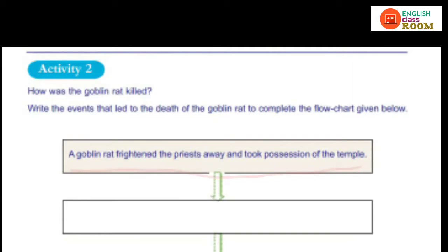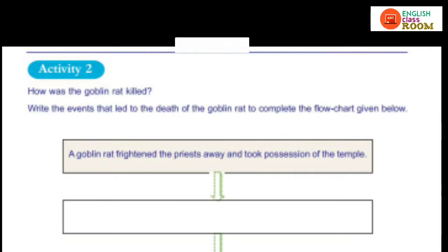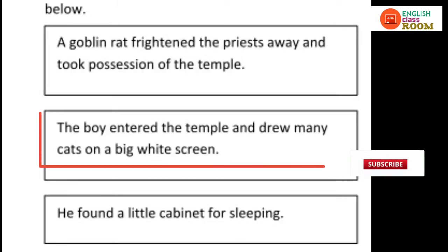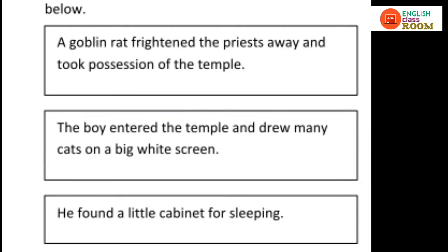The Goblin rat frightened the priests away and took possession of the temple. Then the boy went to the temple in another village. There he saw the big white screen and drew pictures of cats on it.